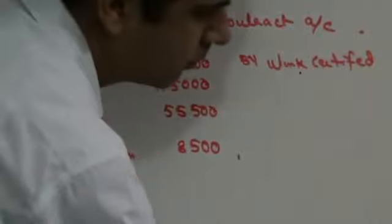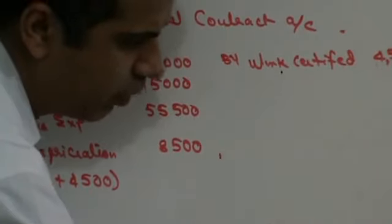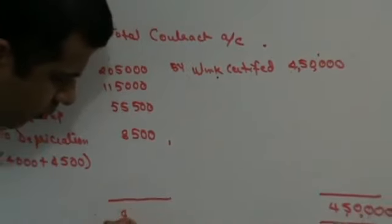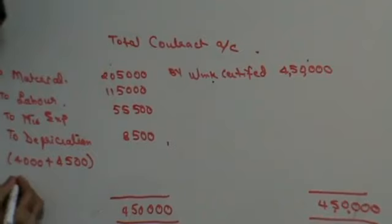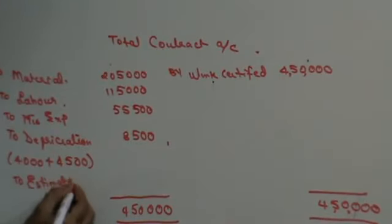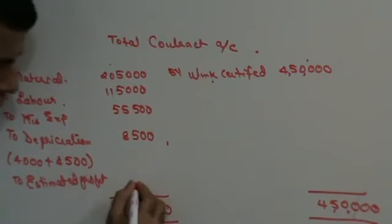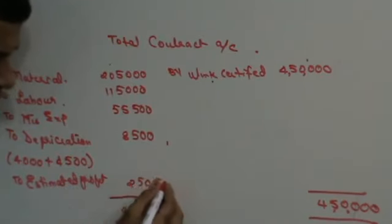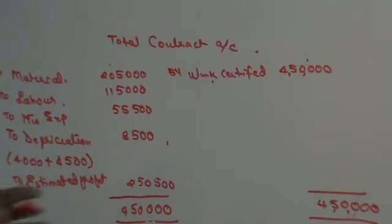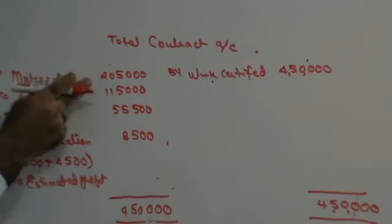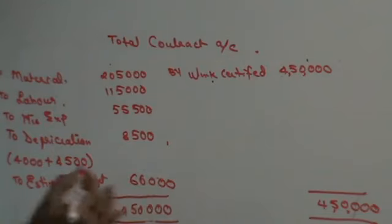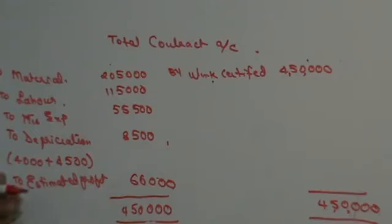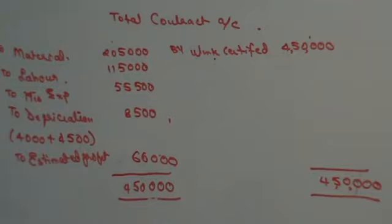Finally, we get this. I think we have done all the entries. Now let's start tallying. Someone please help me tally this first. This is 4,50,000. This is going to be to estimated profit. How much? 66,000. So your difference is 66,000 estimated profit. So whenever you have a total contract account, first thing that you do is you tally your estimated profit.